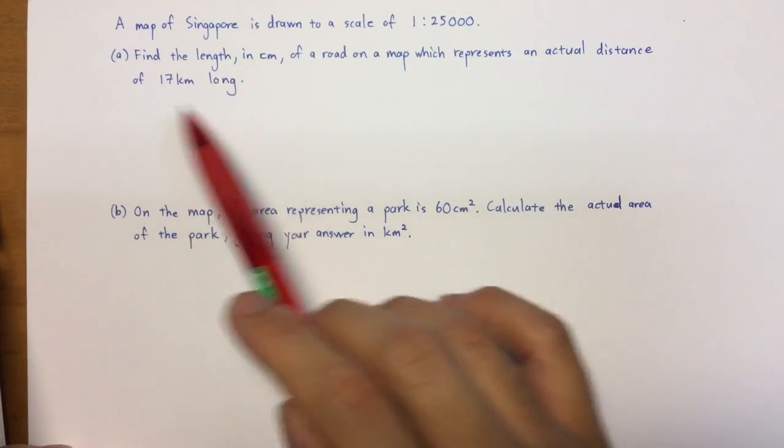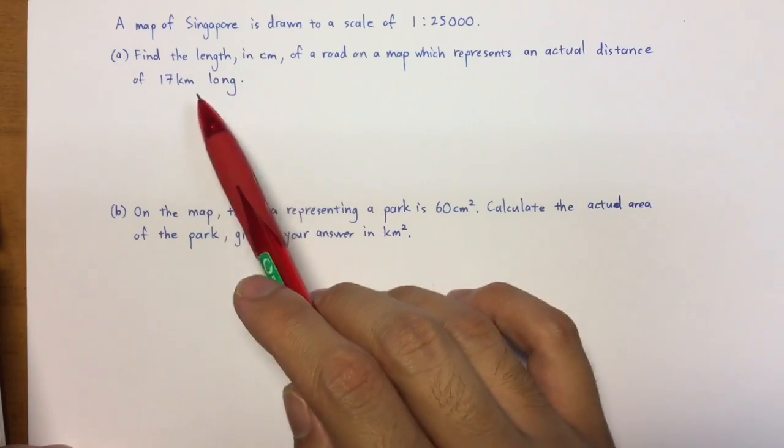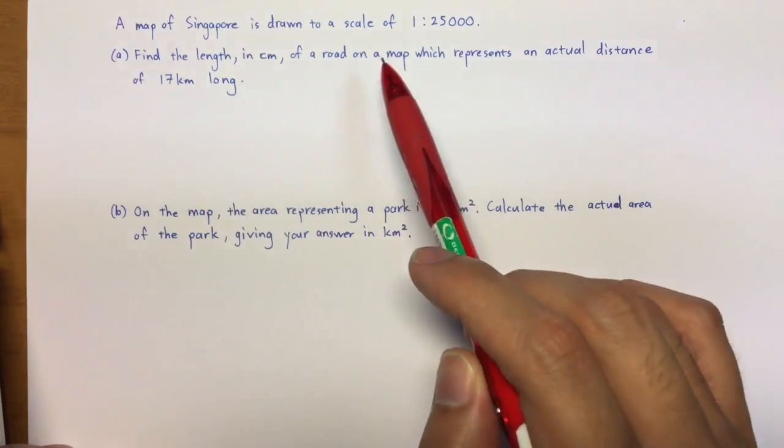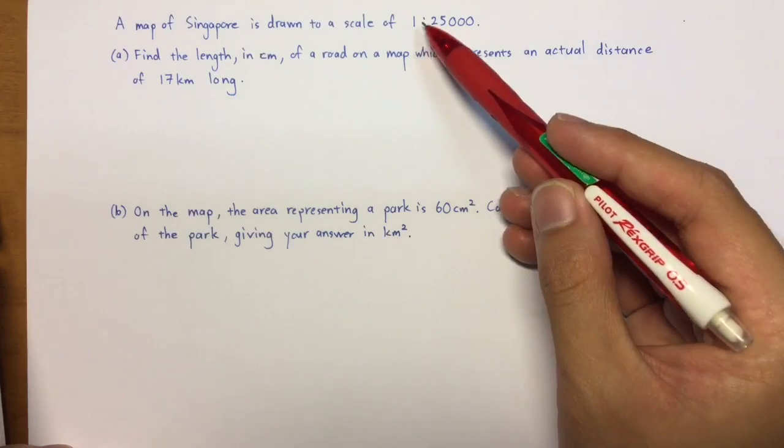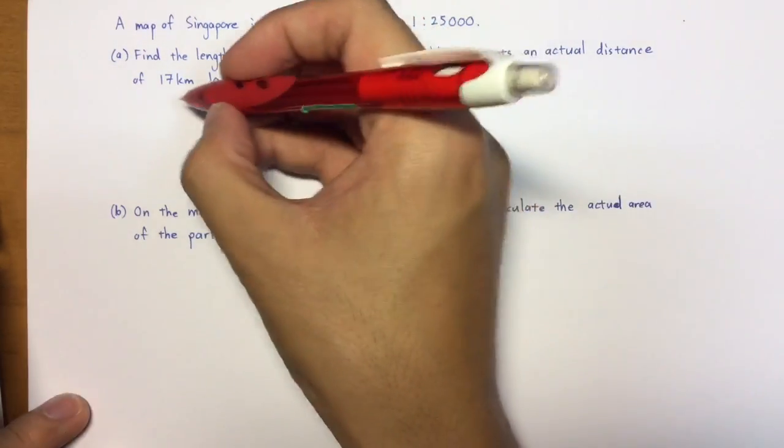So they're asking if an actual road measures 17 km long, what's the distance of it on the map? So the first thing is definitely you're going to carry this down over here.